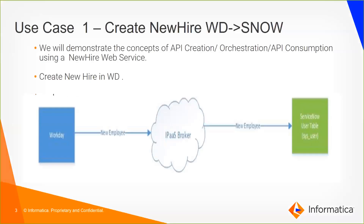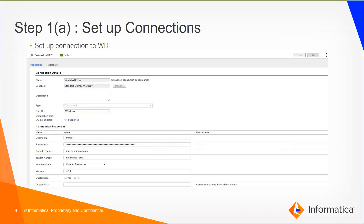As part of this we would like to show you how to create APIs using our app integration platform, how we consume APIs, and how we do orchestration in setting up a new hire web service. Creating an API is essentially a three-step process: you set up connections to all the systems that you're talking to, you then create a process that utilizes those connections, and then you publish the process and Informatica will automatically publish SOAP and REST endpoints for you.